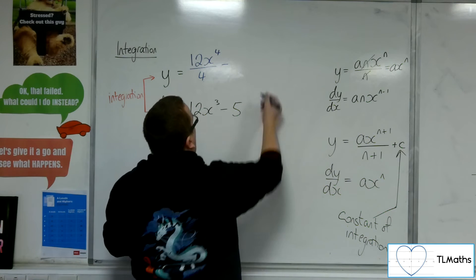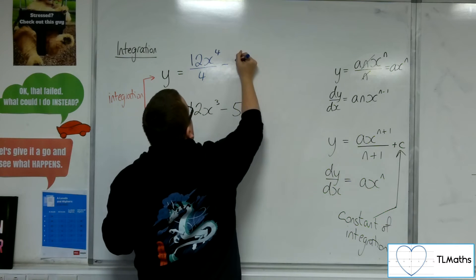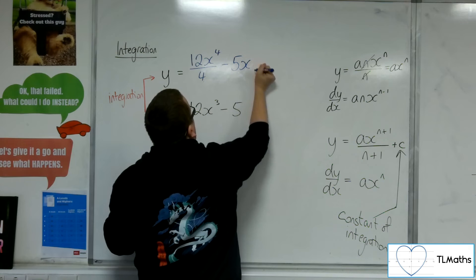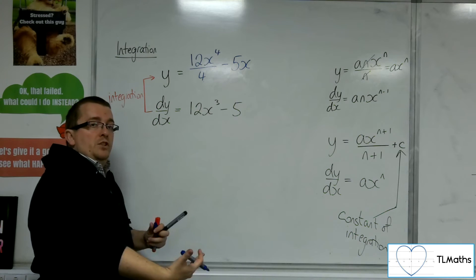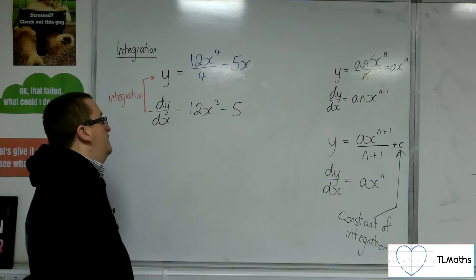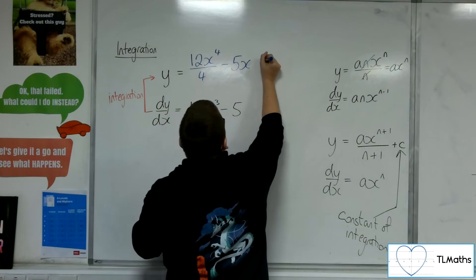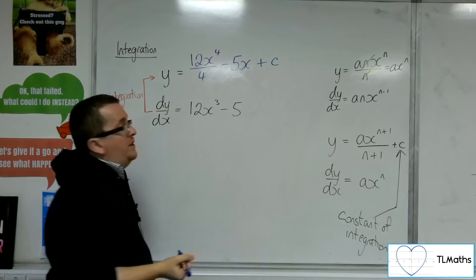But hopefully you should be able to spot, well, minus 5 must integrate to minus 5x. Like, 8 would integrate to 8x. And a million would integrate to a million x. OK? But there's also that plus c constant of integration.